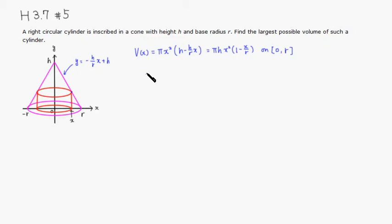Alright, so let's find the critical number. Take the derivative of V. Alright, so pi and h are just constants, so I'll just leave those guys outside. Alright, then we can just use the product rule. So this is our first guy, this is our second guy. So the derivative of the first guy is 2x times the second, which is just 1 minus x over r, plus x squared times the derivative of that, which is negative 1 over r.